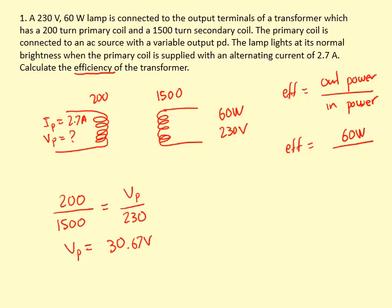Now I can work out the power in the primary. The power in the primary is equal to the current in the primary times the voltage in the primary, which is 2.7 times 30.67, which gives me 82.8 watts.